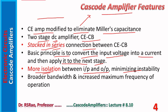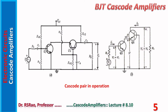Instability due to lack of isolation between input and output is a serious problem in high-frequency amplifiers. The cascode structure provides more isolation between input and output, and for this reason it is more suitable for high-frequency use. Because of this isolation, instability disappears totally or partially. The key features of cascode are broader bandwidth and increased maximum frequency of operation.